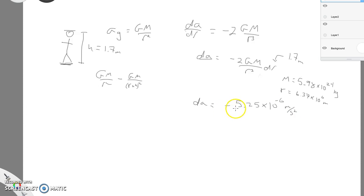And so I get a change of about negative 5.25 times 10 to the negative 6 meters per second squared. And so what that means is, they experience this much less gravitational acceleration. A person standing on Earth experiences this much less acceleration from gravity at their head than they do at their feet.